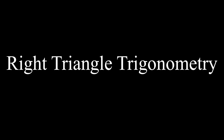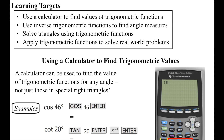Welcome to the second part of our lesson on right triangle trigonometry. In this lesson, we're going to learn how to use our calculators to find values of trig functions. We're going to be using some inverse trig functions to find angle measures. Our last lesson focused on finding the lengths of the sides, so in this lesson we'll learn how to find angle measures. Then we're going to be solving a triangle using our trig functions, and lastly using trig functions to solve real-world problems.